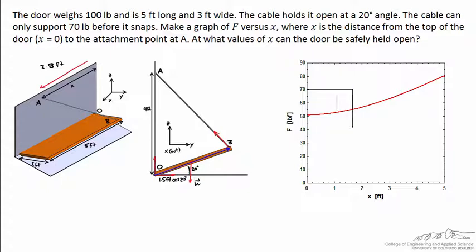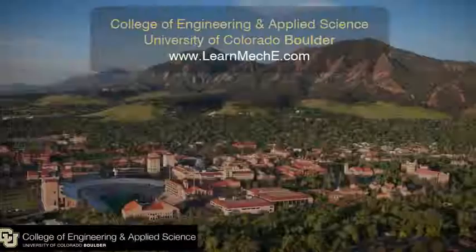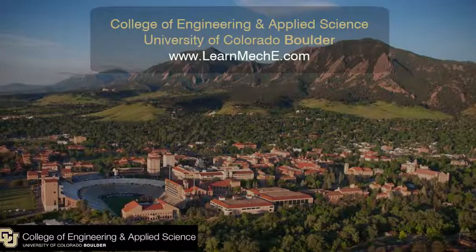So this is what a graph of the force as a function of x would look like. If I come over 70 pounds again, we see this value of 3.8 feet. Anything larger than that and the rope would snap.